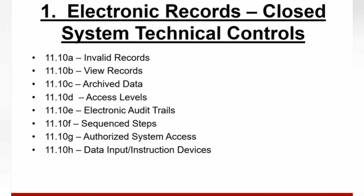For 11.10D, the system must allow different levels of access based on user responsibility, such as regular user or administrator, if appropriate. For 11.10E — electronic audit trails — electronic audit trails must be automatically generated for the creation, modification, and deletion of records, but are not required for non-essential automated background recording such as internal buffers, data swap files, and temporary files.